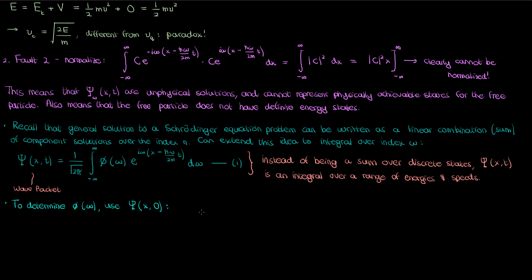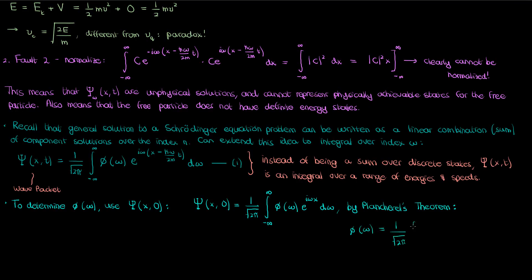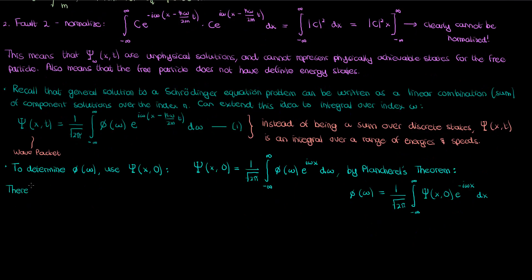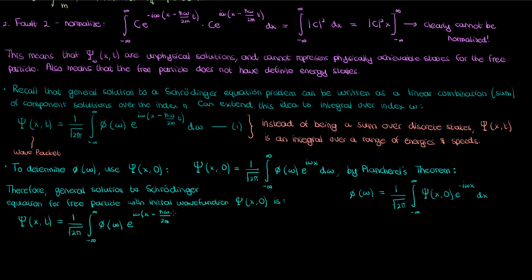We use the initial condition specified at the beginning when we solve the Schrödinger equation for the free particle. From equation 1, the initial condition can be written in terms of phi of omega via the following integral. We can then use Plancherel's theorem — which I'll cover in another video — to write down our formula for phi of omega: if the initial condition is expressed via an integral of phi, then phi can be expressed via an integral of the initial condition. So the general solution to the Schrödinger equation for the free particle with initial wave function capital Psi of x comma zero is given by an infinite integral, where phi of omega is given by that formula. Notably, these two integral formulas resemble the Fourier transform and its inverse — phi of omega is the Fourier transform of capital Psi of x comma zero, and vice versa.